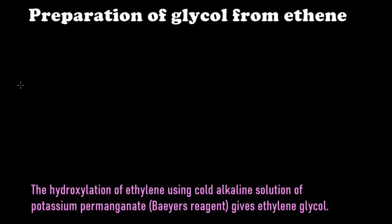Hi everyone. In this video we are going to learn the preparation of glycol from ethene — that is, we are going to prepare ethylene glycol from ethylene. Let's write the structure for ethylene first: CH2 double bond CH2. This is the structure of ethylene. We are going to do hydroxylation, that is, addition of a water molecule and oxygen together to the ethylene.